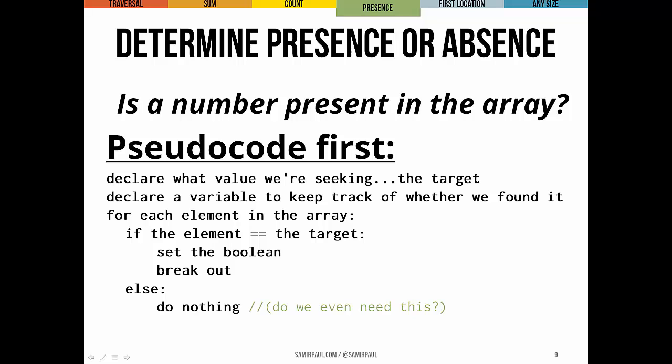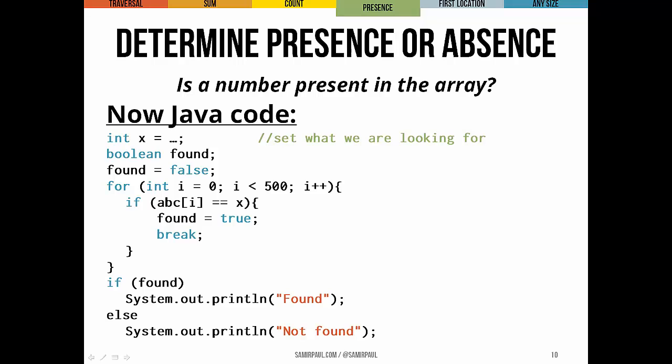Otherwise, if that element wasn't, well, it could still be the next one. So just do nothing. And think about whether we actually need that last clause. Here's what my Java code looked like. Again, it's all really the same. You'll notice that I took out that unnecessary else clause. That's gone now. And afterward, I've tacked on a little if statement that uses the boolean, which we initialize to false, but gets set to true if we find the element. It uses that boolean to print a final result.